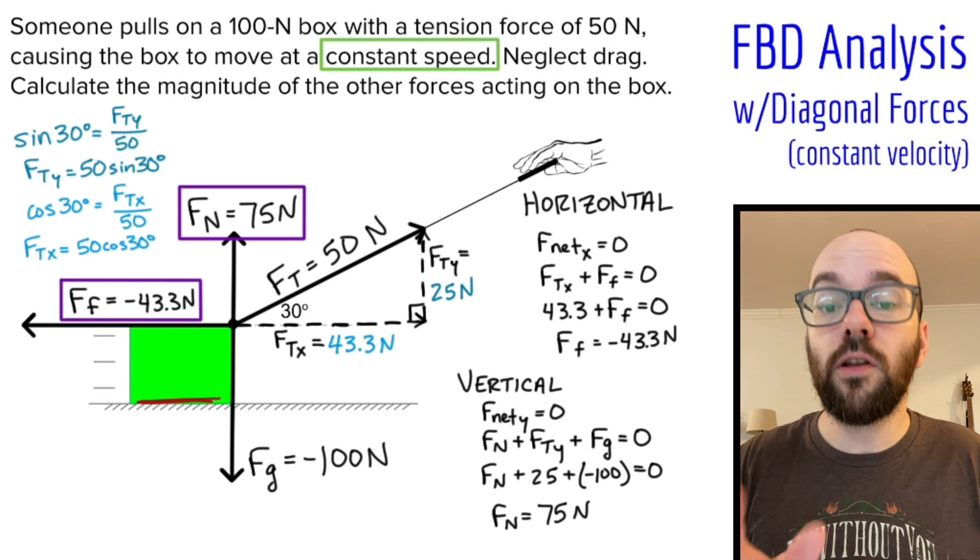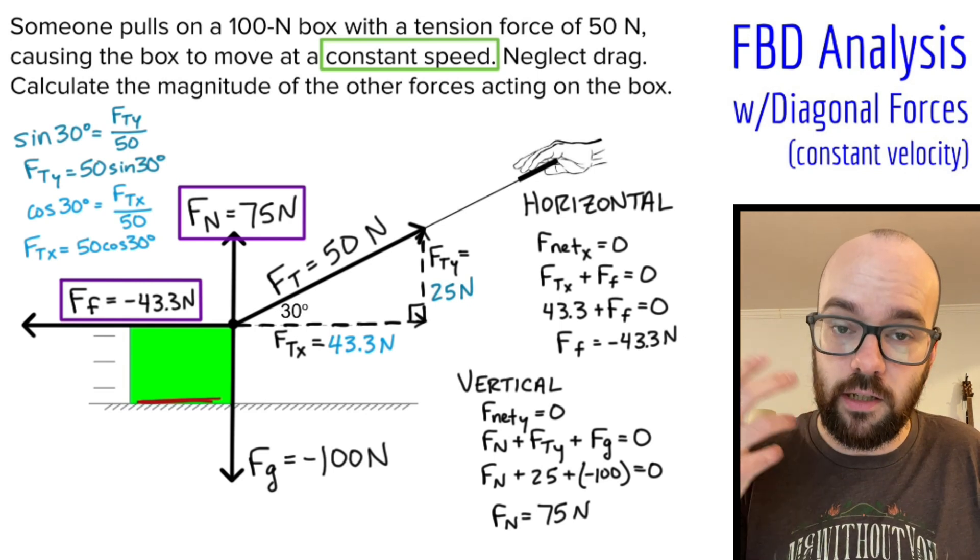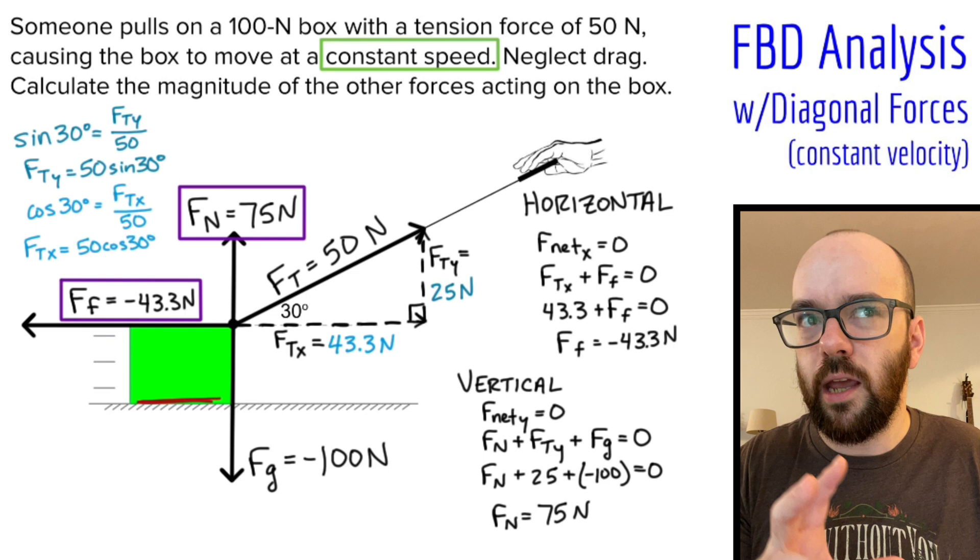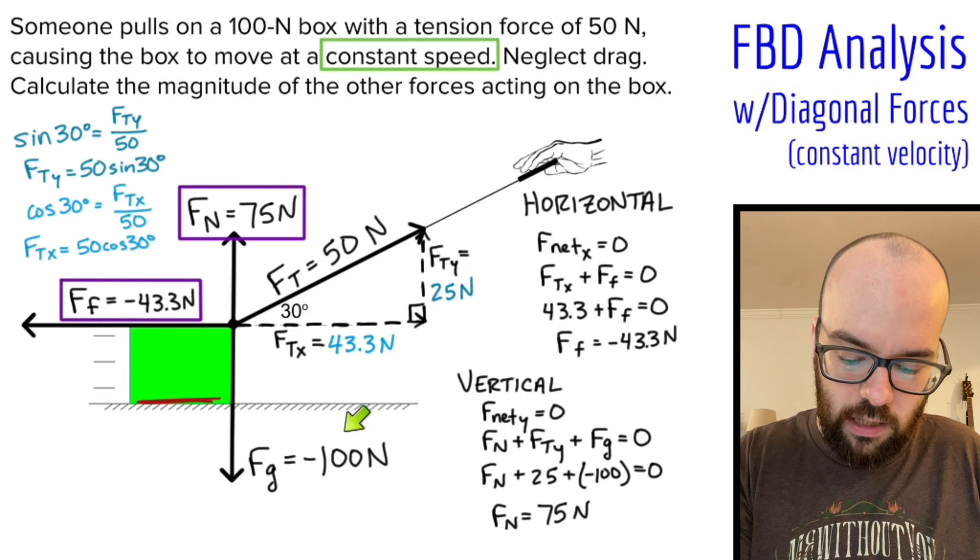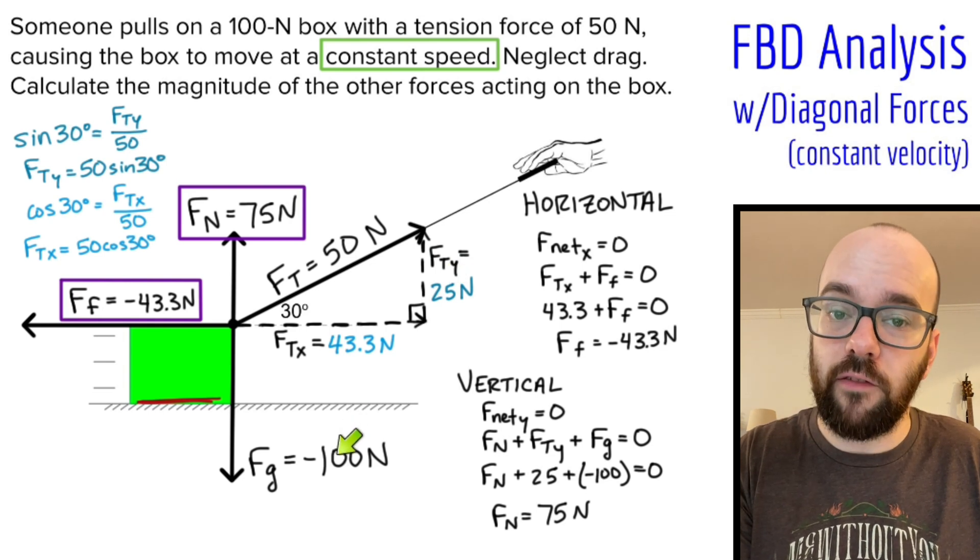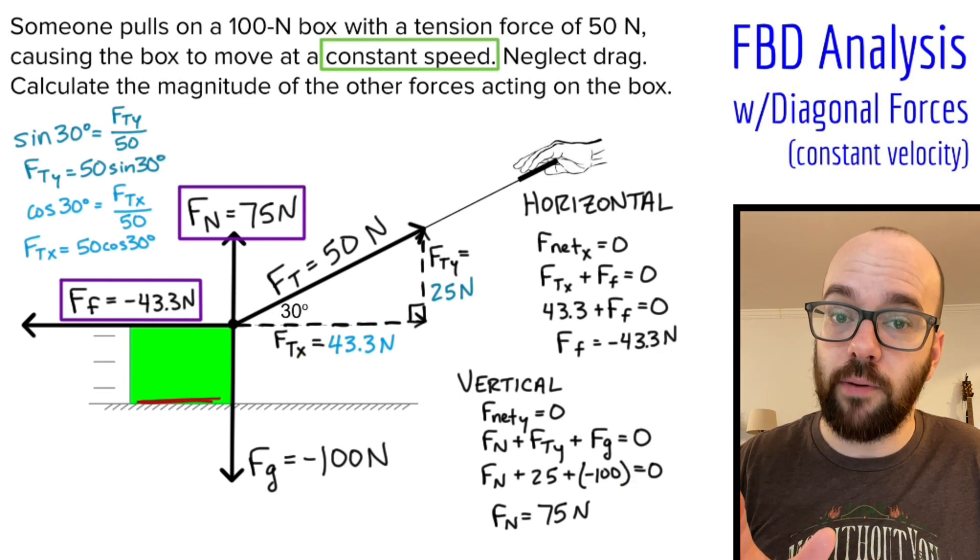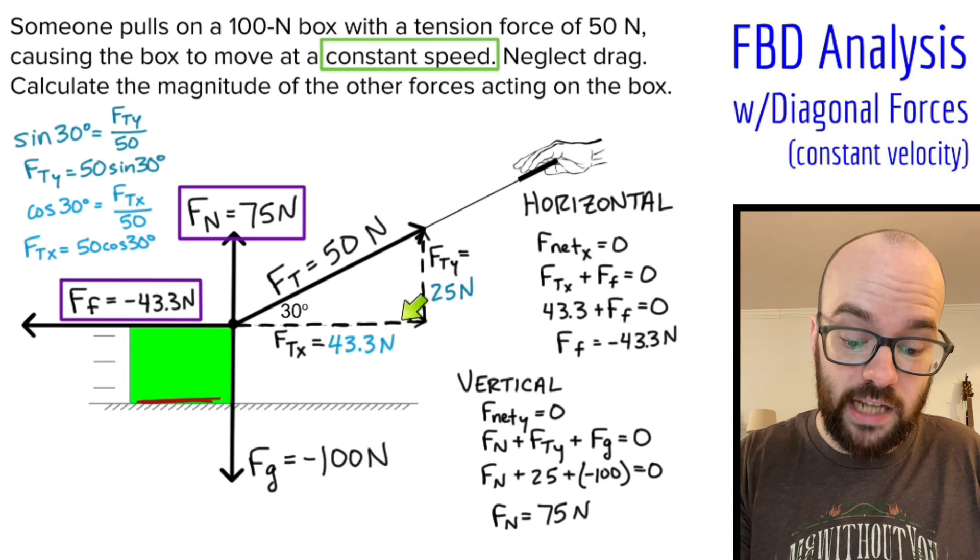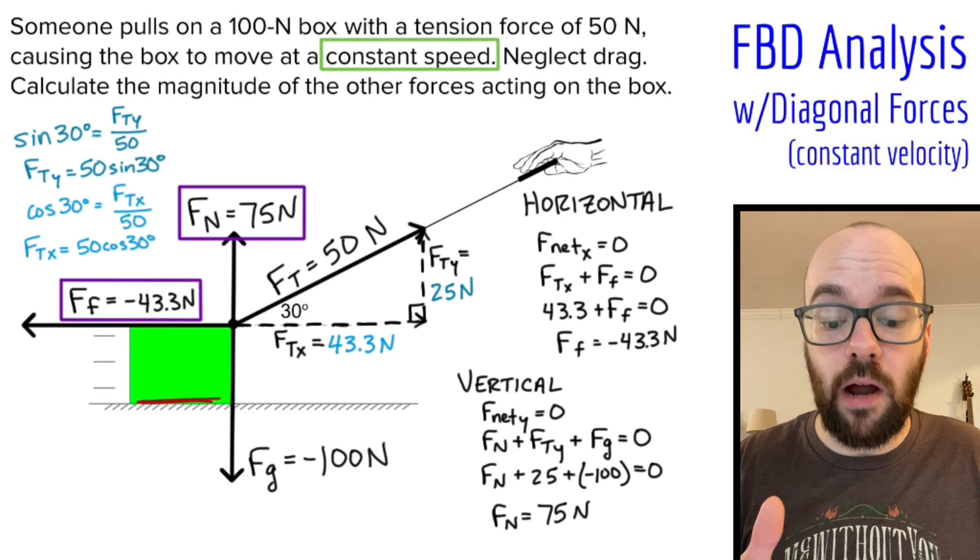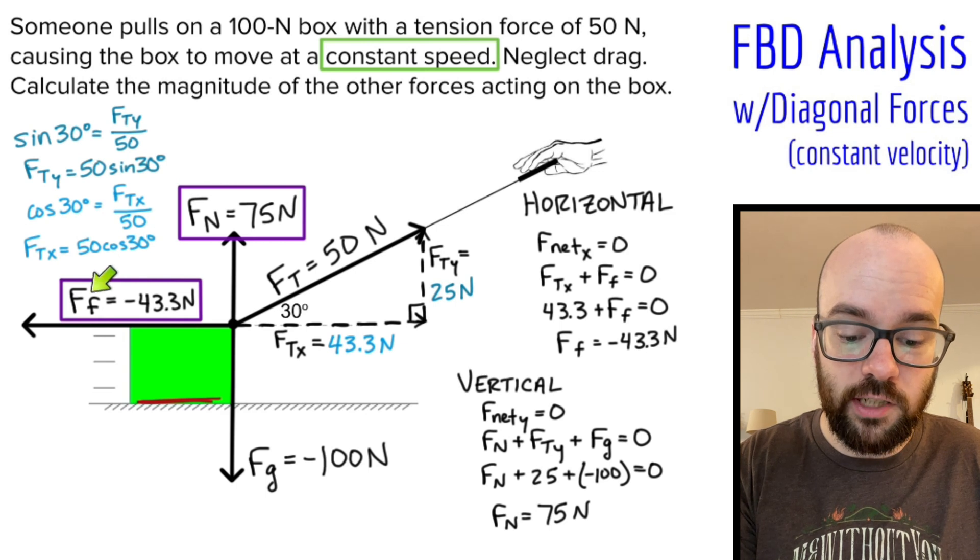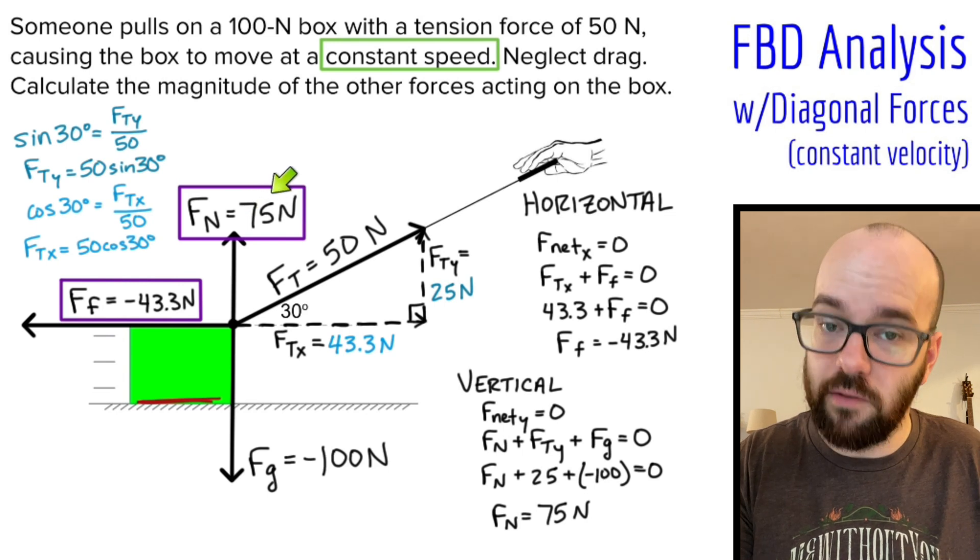Now you could do that without writing out the equation like this. A lot of times, students find it easier to not write out that equation, but rather just work through this in your head. If you think about what plus 25 would give you 100? Well, 75 plus 25 would give you 100. So you could have done that one in your head. But I find it helpful to write out, especially when we get to problems where the F net is not zero. So we finished this problem. We've solved for the magnitudes of the two forces that we didn't know. The friction force having a magnitude of 43.3 newtons, and the normal force having a magnitude of 75 newtons.